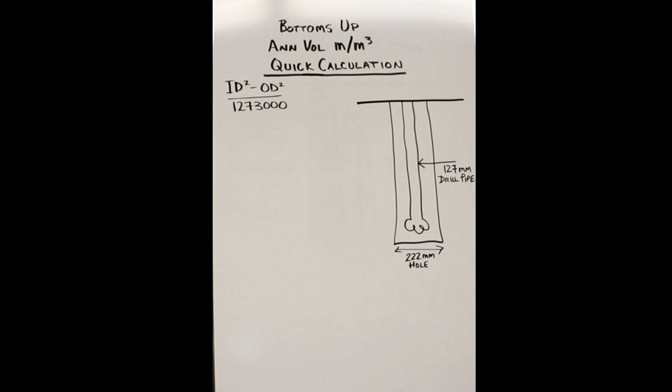When we're talking about ID here, we're talking about ID of the hole, and the OD, that'll be the OD of the pipe or the tubular that you're using at the time in that hole. Now you take your ID, 222 times 222 in this example here.